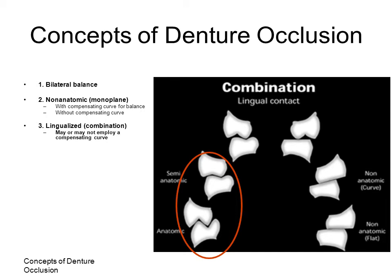And the lingualized articulation, which employs an anatomic maxillary tooth opposing a semi or non-anatomic mandibular tooth. Chapter 17 of your text describes setting the teeth for each scheme in greater detail.